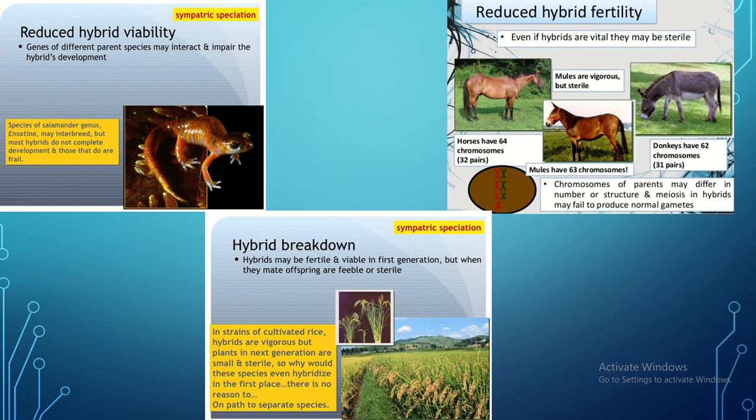The second example is reduced hybrid fertility. Horses and donkeys are artificially fertilized and the product is called a mule. Mules are infertile organisms that cannot reproduce further because they have chromosomal abnormalities resulting from belonging to two different species — one genus for horse and another for donkey. The artificially fertilized hybrid is not viable and not fertile.